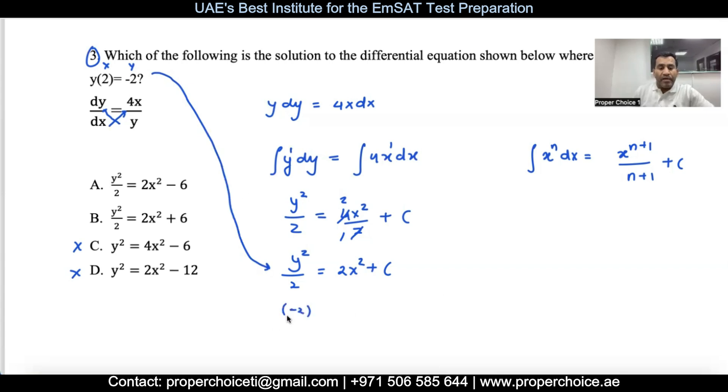Substitute: (-2)²/2 = 2(2²) + c. That's 4/2 = 2 = 8 + c. To solve for c, take 8 to the other side: c = 2 - 8 = -6. I got c = -6, so the final equation becomes y²/2 = 2x² - 6, which matches option A.